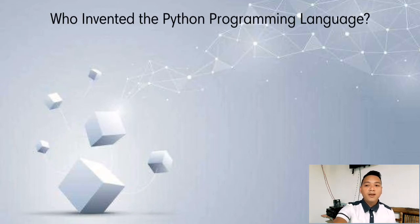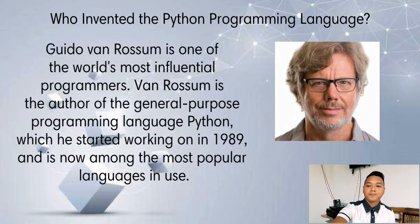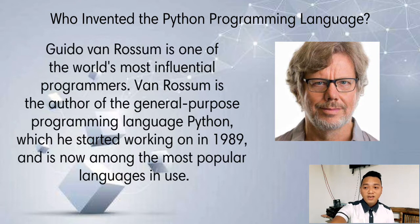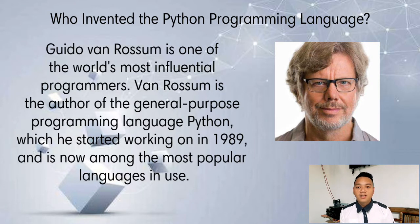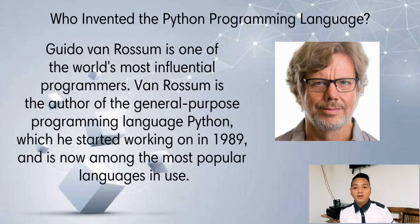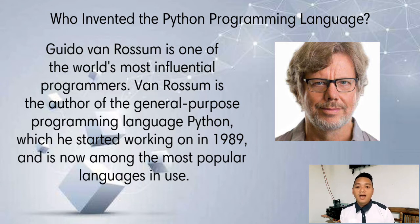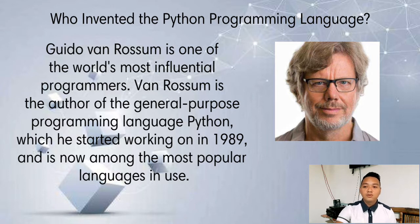Now, who invented the Python programming language? Guido Van Rossum is one of the world's most influential programmers. Van Rossum is the author of the general purpose programming language Python, which he started working on in 1989 and is now among the most popular languages in use.